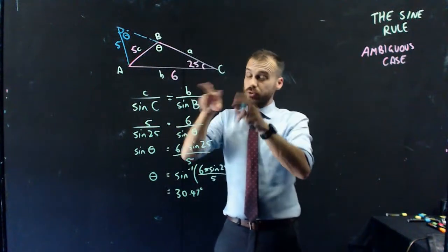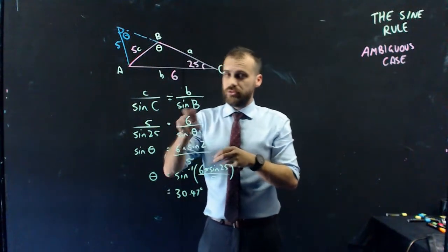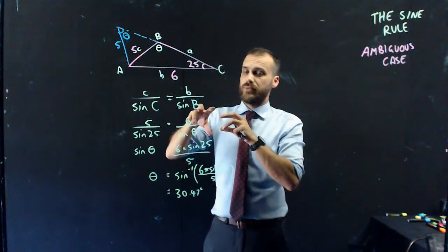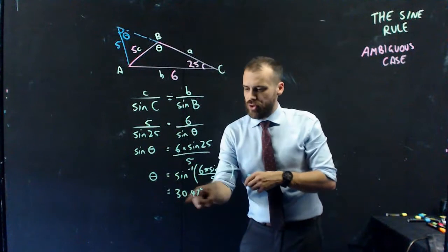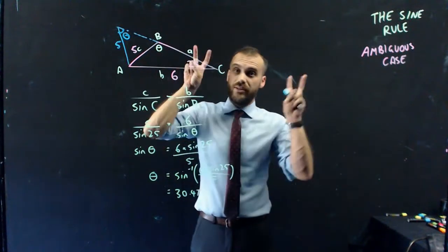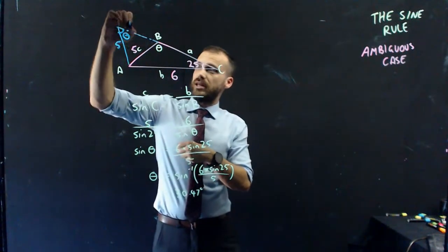So both triangles can be described using those three things in the same way. There's two answers to theta, and 30.47 isn't that theta, it's that theta.